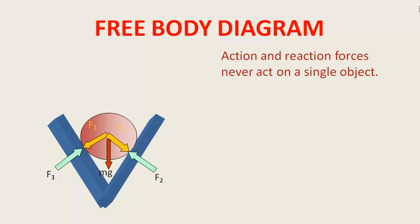अब इस V-shape surface को देखिए — F1 की reaction forces आई हैं। अगर आप spherical body का FBD बनाएंगे, तो mg और green वाले F1, F2 दिखाएंगे जो surface लगा रहा है। लेकिन अगर आप surface वाला system का diagram बनाएंगे, तो yellow वाले F1, F2 बनाएंगे। और जब आप combined system बनाएंगे — sphere/cylinder और V-shape को एक मान लिया है — तो F1, F2 cancel हो जाएंगे क्योंकि internal forces हैं।